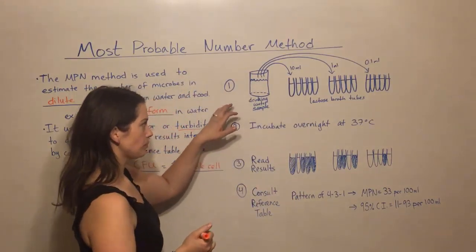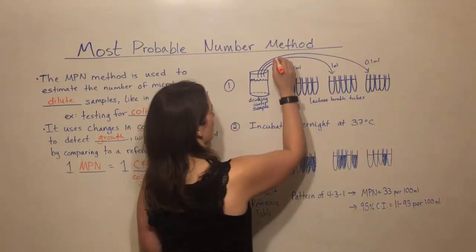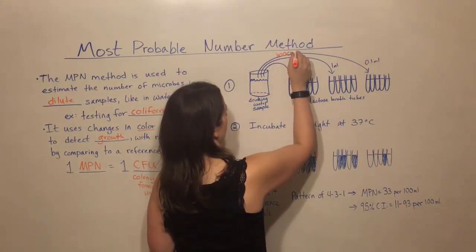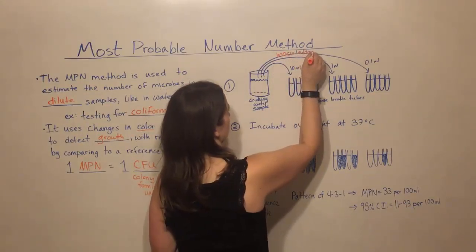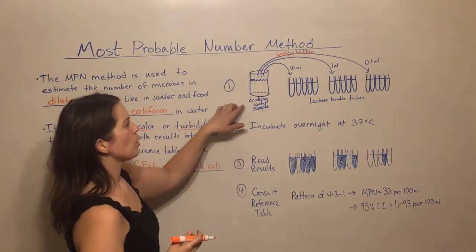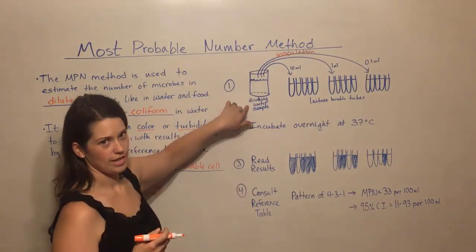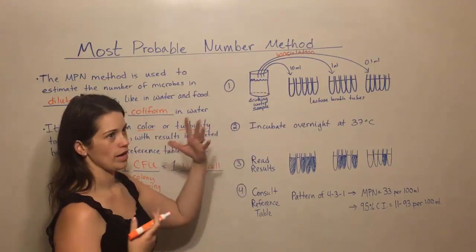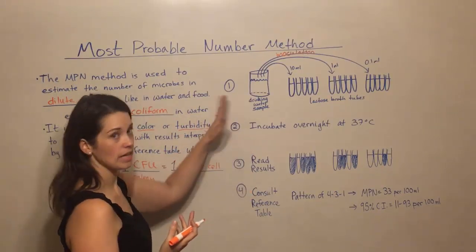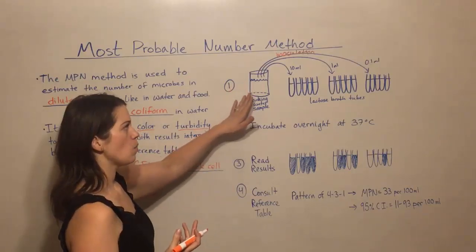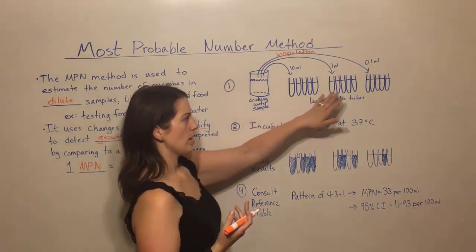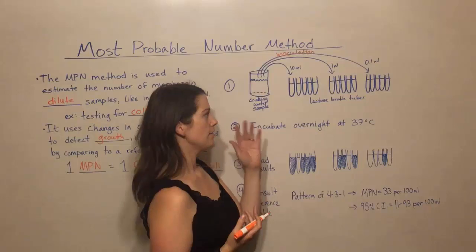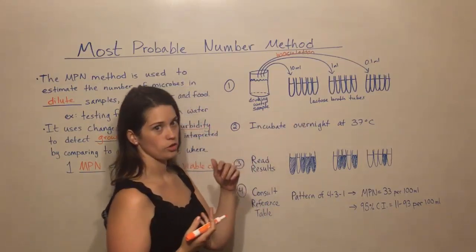So let's go through an example. First, you have your inoculation. In this example, we're looking at a water sample, perhaps it's from a pond, perhaps it's from a recreational swimming area, perhaps it's a drinking water sample. We have some water sample here.